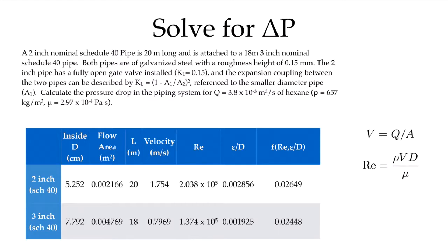And from that, I can go to either my Moody diagram, or my calculator, or in my case, the function that I implemented in Python in my Jupyter notebook, and ask for the friction factor at that Reynolds number and this relative roughness. I get a value in the 2 inch pipe of 0.02649. When I repeat that with this relative roughness and this Reynolds number, I get this value of 0.02448 for the flow in the 3 inch pipe.